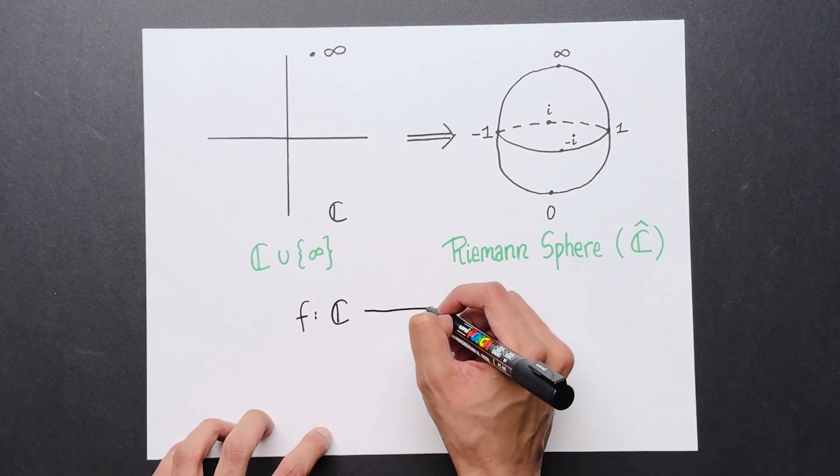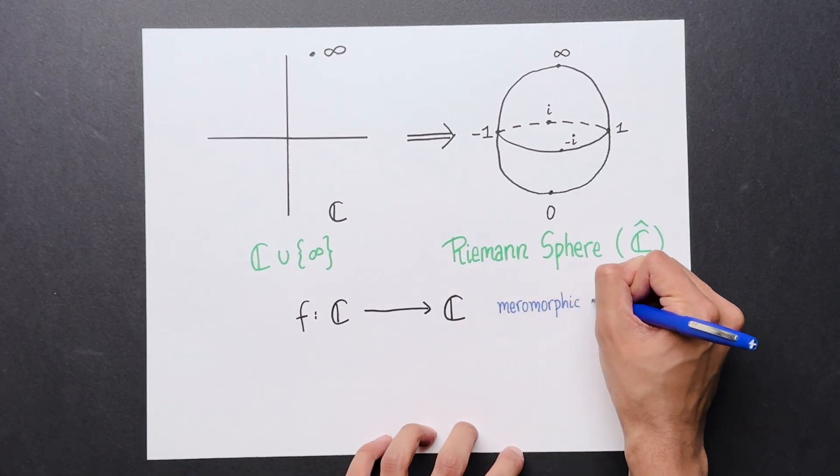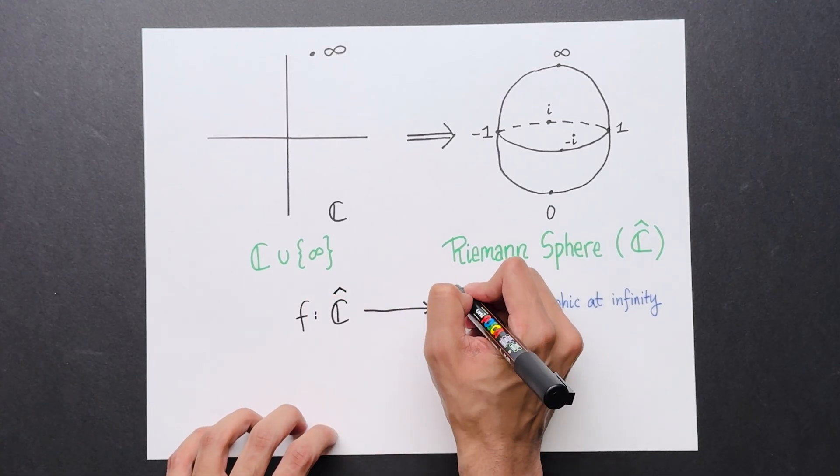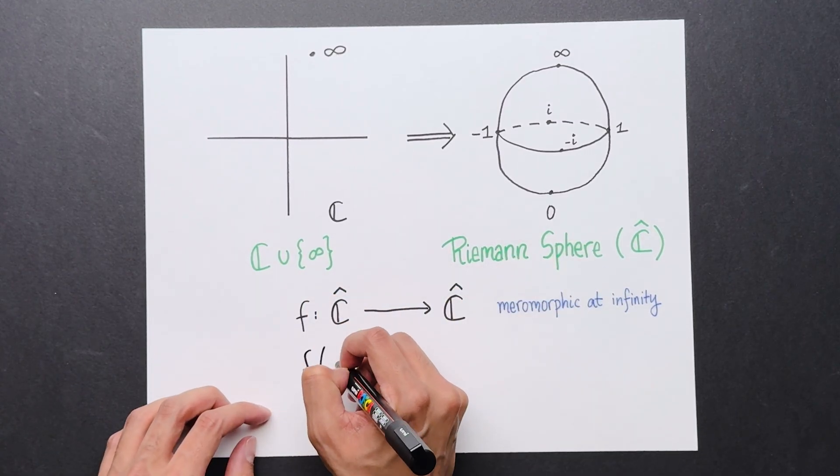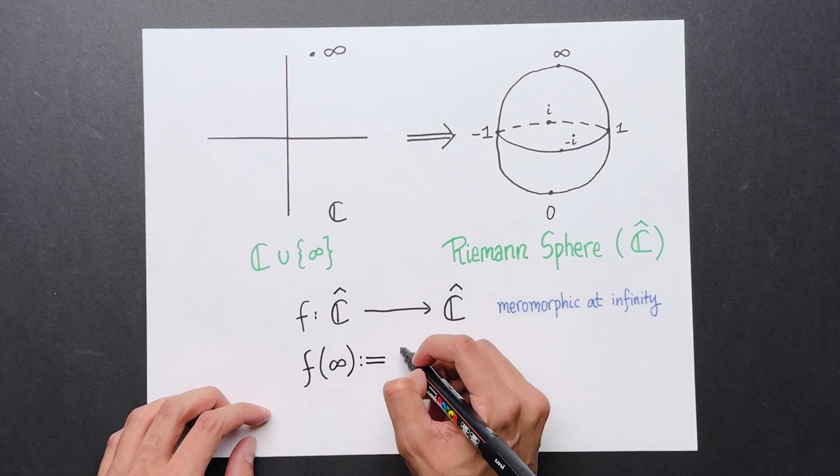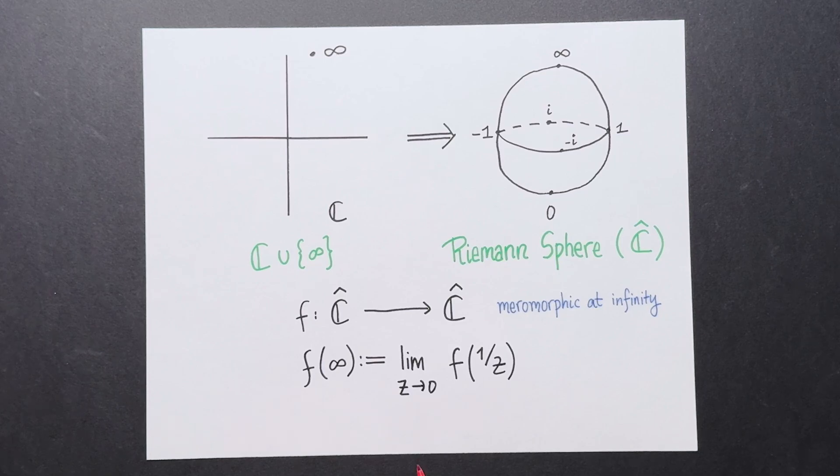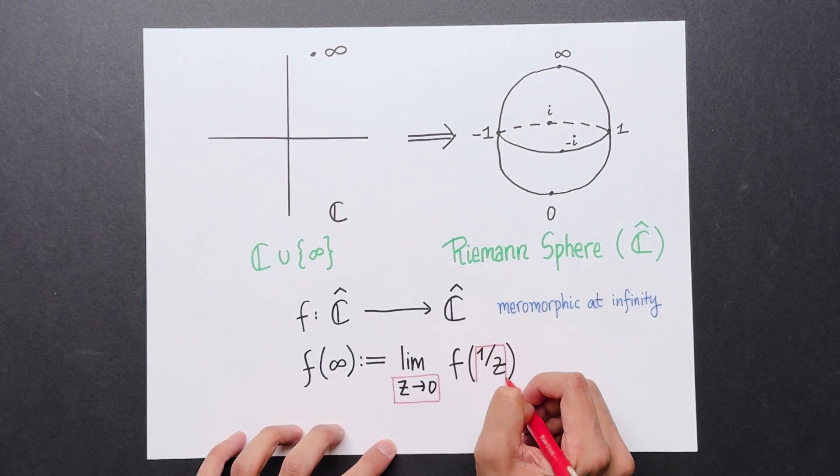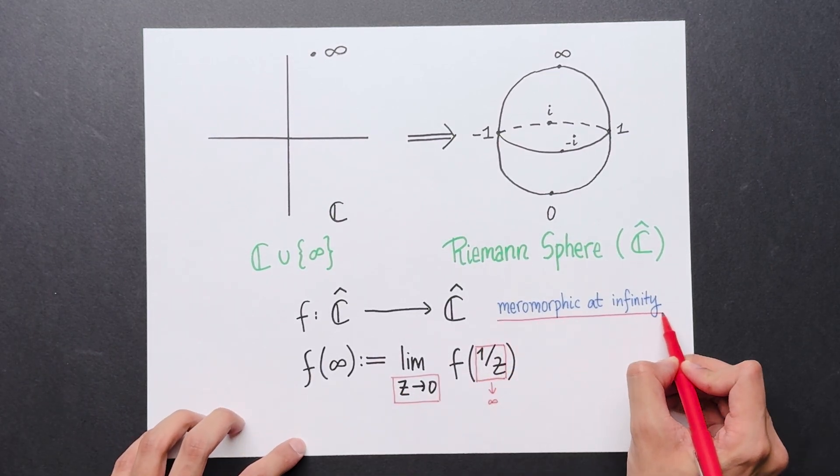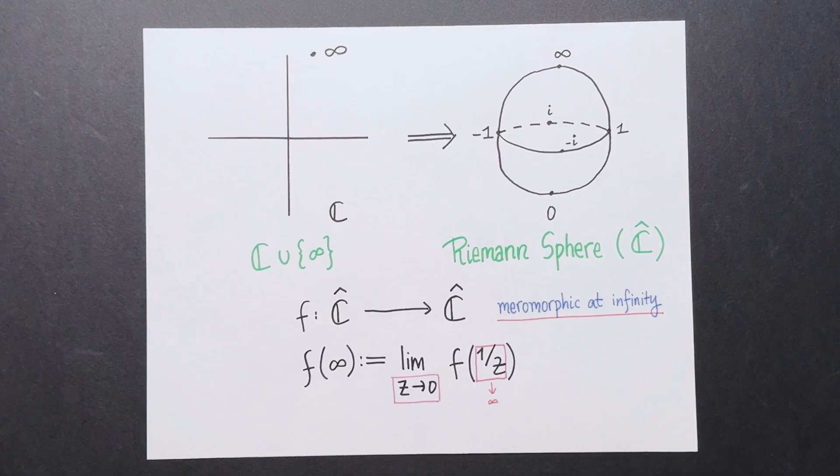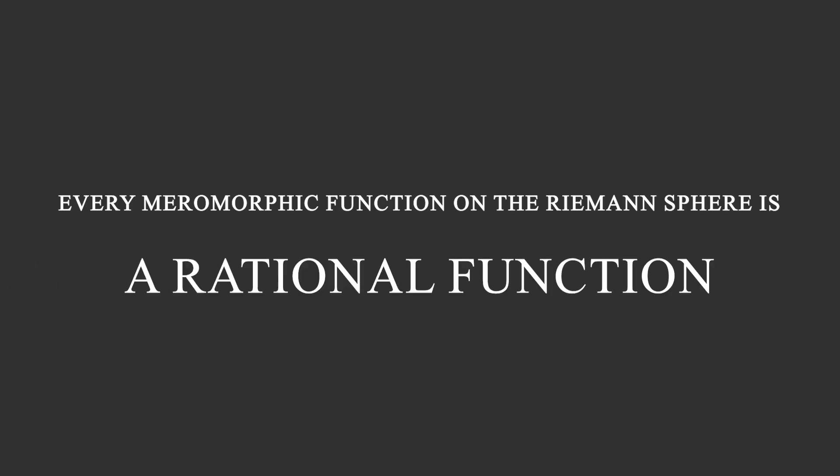Now suppose you have a function f from C to C, which is meromorphic at infinity. We can extend it to a meromorphic function, from C hat to C hat, by simply setting f of infinity to be the limit as z approaches 0 of f of 1 over z. The idea being that as z goes to 0, 1 over z goes to infinity. Then f is meromorphic at infinity precisely if this map is meromorphic at the point infinity of the Riemann sphere. So that explains where the terminology comes from. We can now restate our earlier theorem using our new language. Every meromorphic function on the Riemann sphere is a rational function.